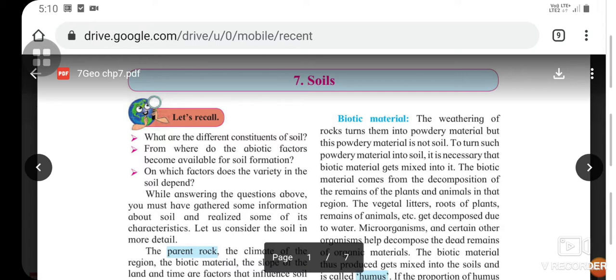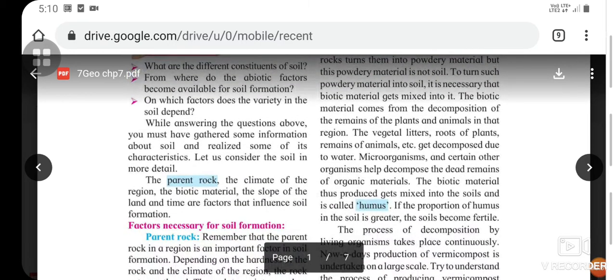We will review a few questions: What are the different constituents of soil? From where do the abiotic factors become available for soil formation? On which factors does the variety in the soil depend?